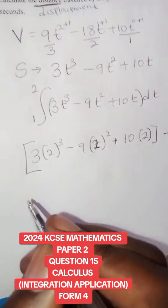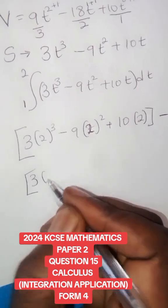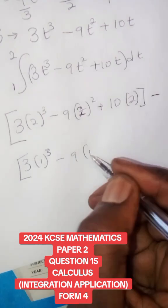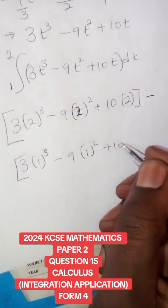Then we subtract the second one: 3 × 1³ - 9 × 1² + 10 × 1.